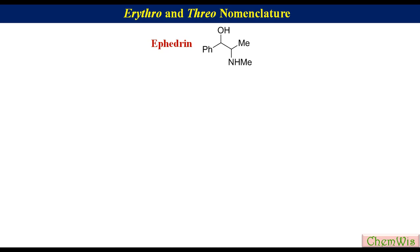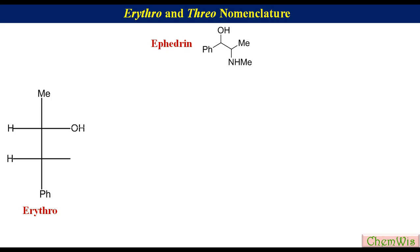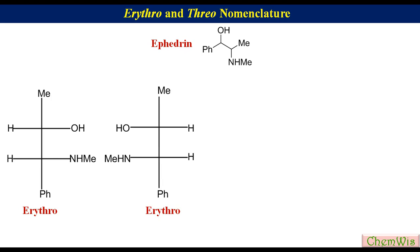Let's take the example of ephedrine. For drawing the erythro diastereomers, draw an 'A' skeleton for the Fischer projection and put methyl and phenyl on the vertical lines. Put both hydrogen atoms on the left, and OH and NHMe on the right. The second erythro isomer will be its enantiomer, like this.